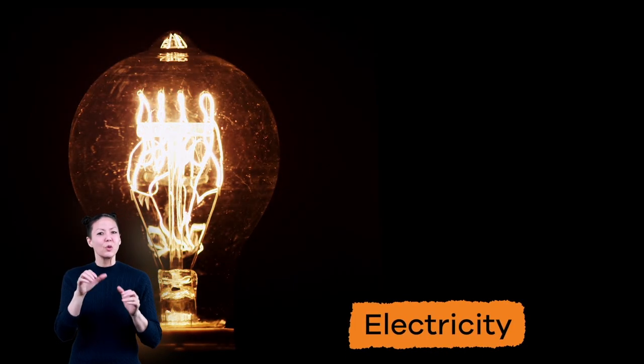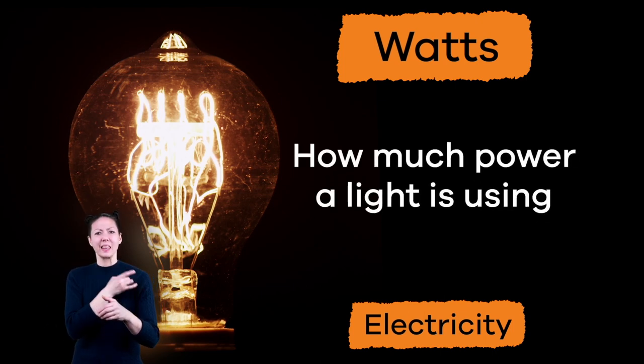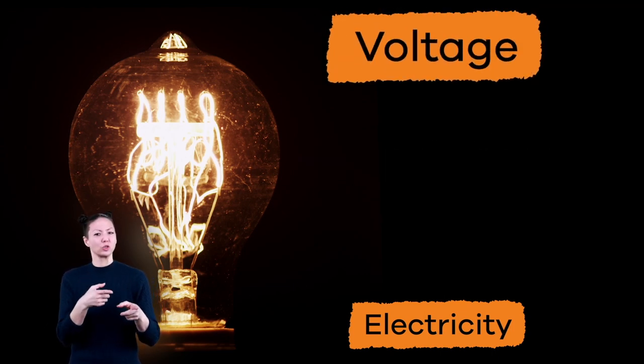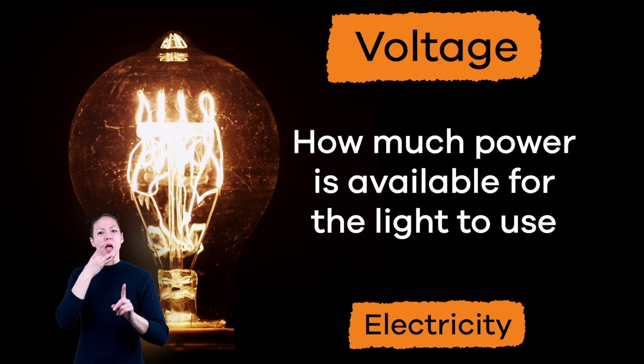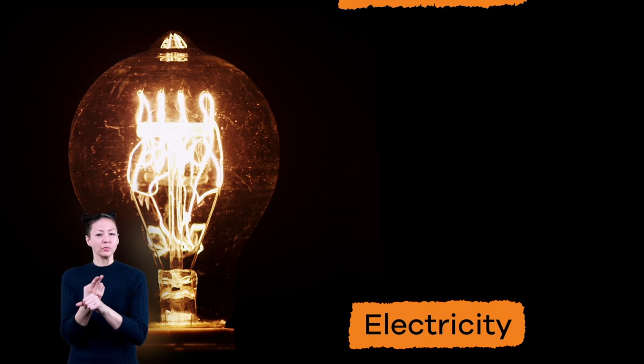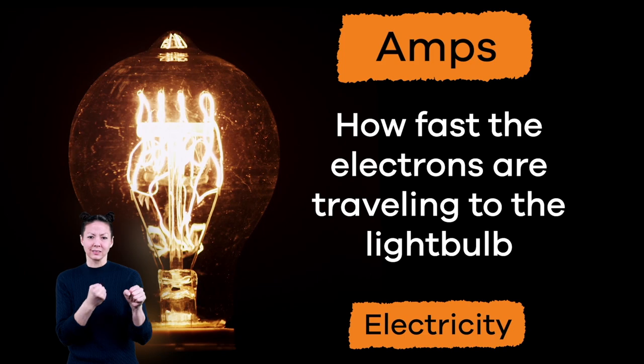There are some important words that have to do with electricity. These words are watts, or how much power a light is using. Voltage, how much power is available for the light to use. And amps, how fast the electrons are traveling to the light bulb.